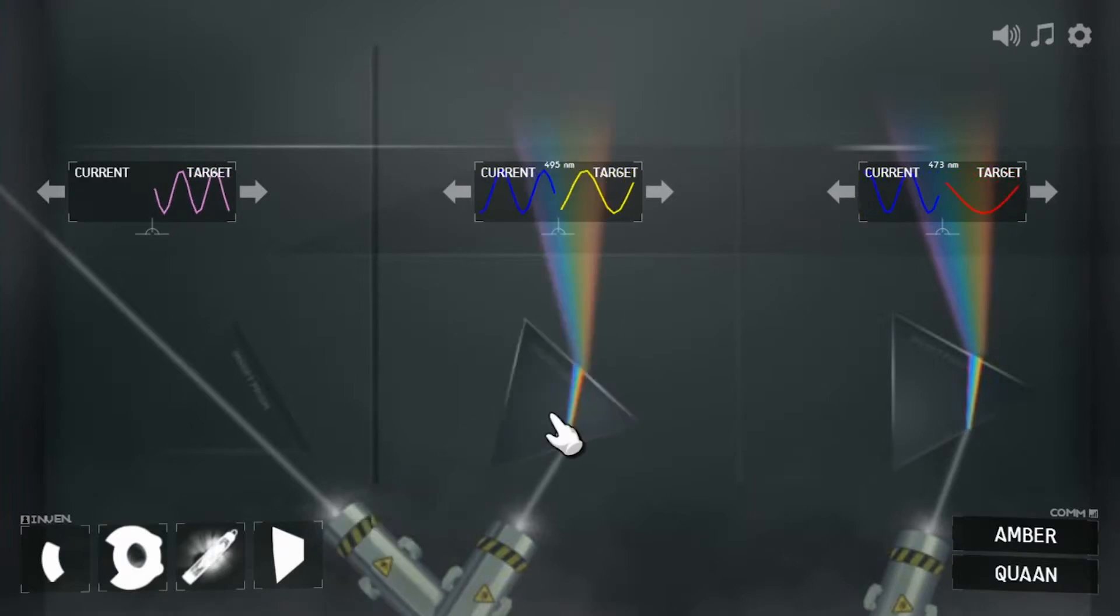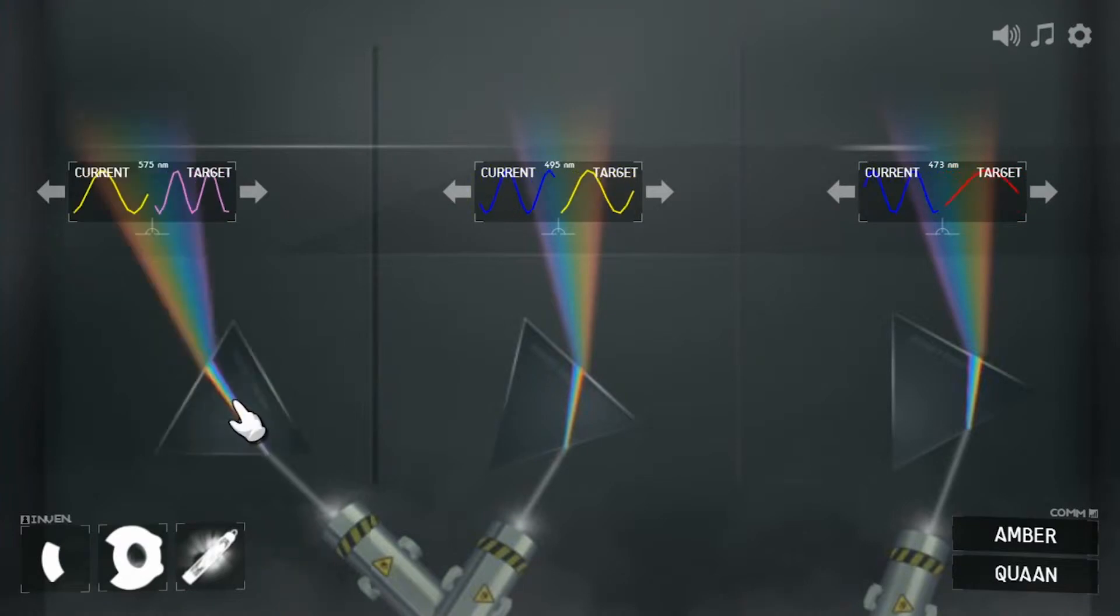And once you've split the beams you just have to line up the receiver with the part of the light spectrum that matches the target wavelength. It's easier than it sounds. Just move the receiver over the spectrum.